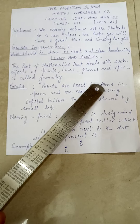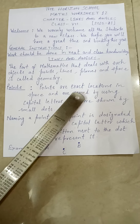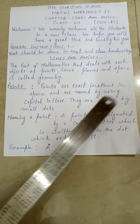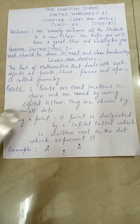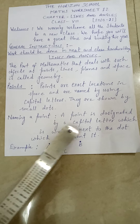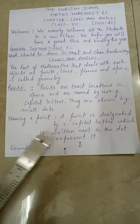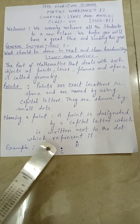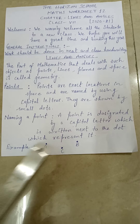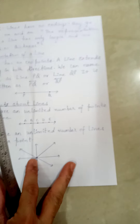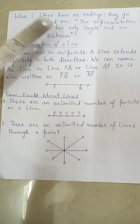Points are exact locations in space and are named using capital letters. They are shown by small dots. A point is designated by a capital letter written next to the dot which represents it. For example: Point A, Point C, Point B — in this way we can name a point.